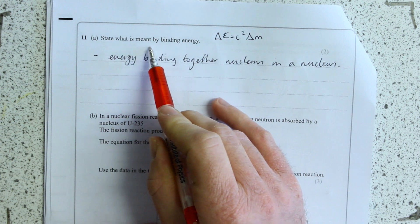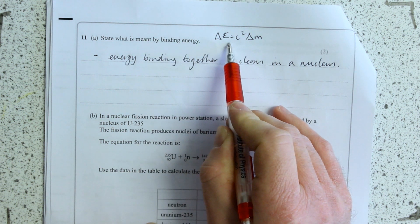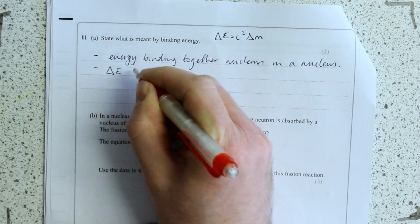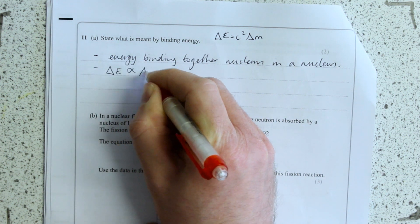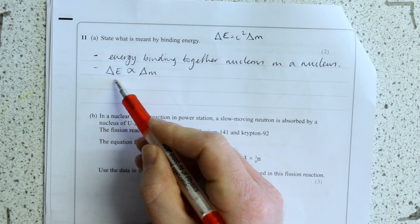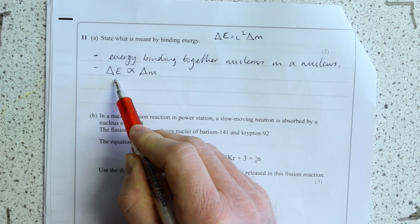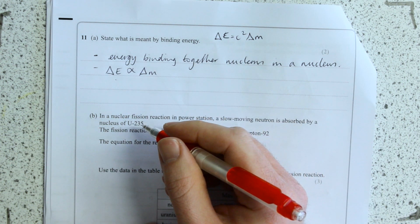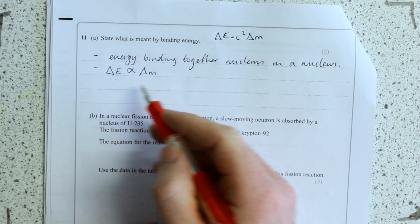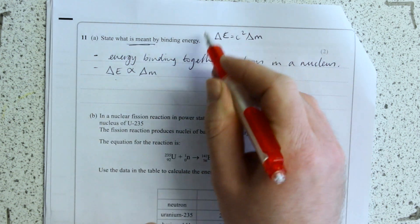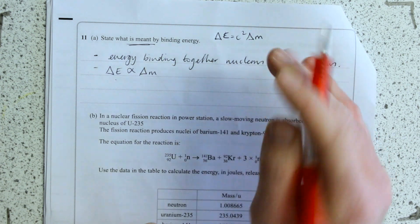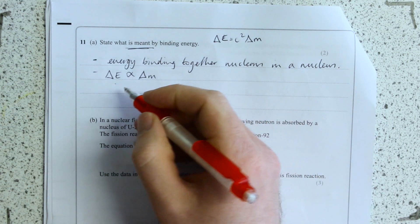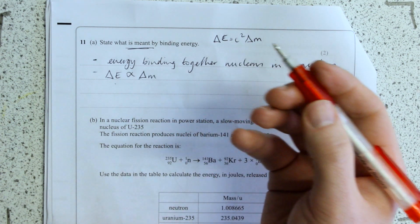We can define binding energy using the equation. Delta E is proportional to delta m. It is the energy equivalent to the mass deficit, and they really wanted you to say that in this question. So if you're asked to define something — what is meant by something — explain what the algebra tells you. The binding energy is the energy equivalent to the mass deficit.